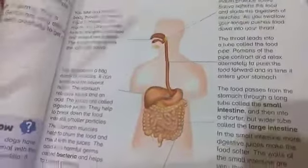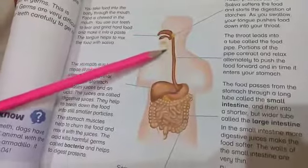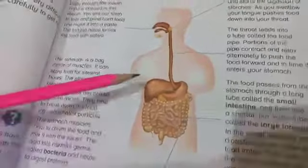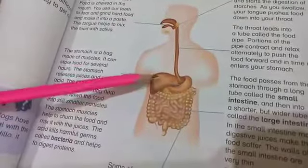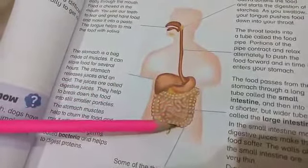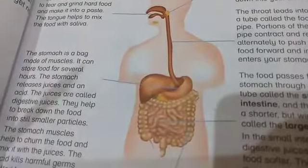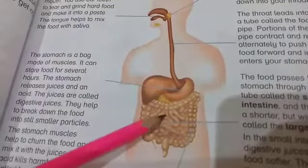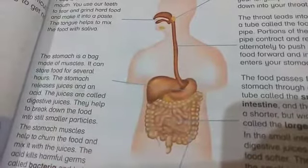The first one is the mouth, then a long tube that is called the food pipe, then the stomach, then the liver, and then a longer tube that is the large intestine, and inside the large intestine a coiled tube that is the small intestine.